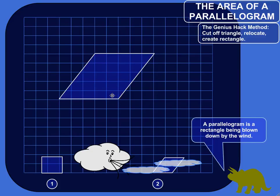All right, we're going to find the area of a parallelogram, and instead of using the area formula for a parallelogram, we're going to use the genius hack method, as I like to call it, which means we're going to cut off a triangle, relocate it, flip it around, and make this whole thing into a rectangle.